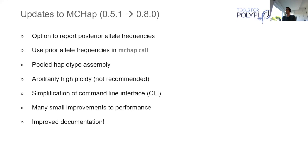In terms of updates since I last gave a presentation, we've gone from version 0.5.1 up to 0.8.0. The main three areas I'll look at today are: an option to report posterior allele frequencies (equivalent to the posterior mean genotype); including priors on allele frequencies in MCHAP call specifically; and a pooled haplotype assembly useful in situations like a biparental cross. I've also written quite a bit of documentation for the tool in the last few months, including the notebook I'm about to present — things have improved a lot.